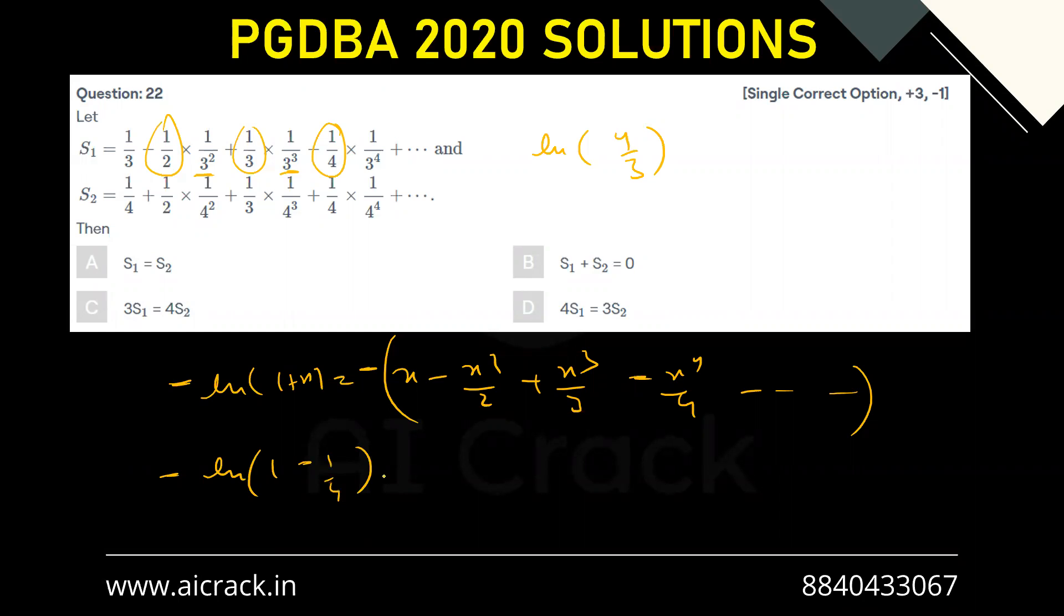-1/4 - 1/2 · (1/4)² - 1/3 · (1/4)³ and so on. So this minus gets clubbed with every term and makes it positive, and basically this is S2.